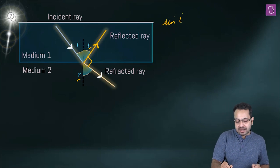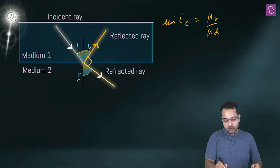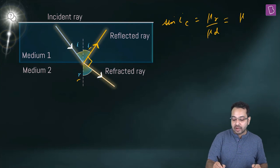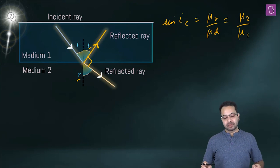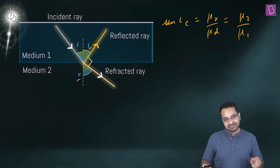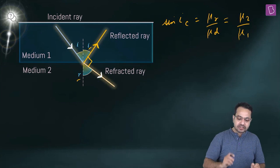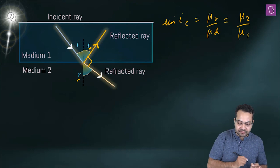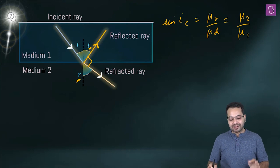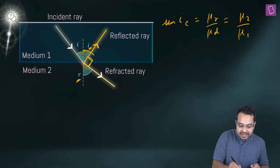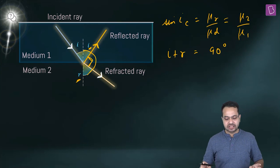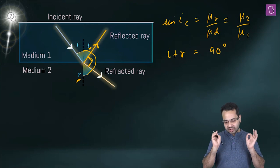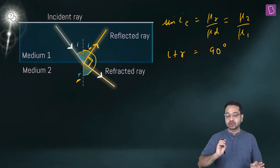The critical angle ic = sine⁻¹(μ₂/μ₁). Since the reflected ray and refracted ray are perpendicular, and the angle of reflection equals i, we get i + r = 90°, so r = 90° − i. The relationship I want is between the refractive index and the angle of incidence, which we can find using Snell's law.